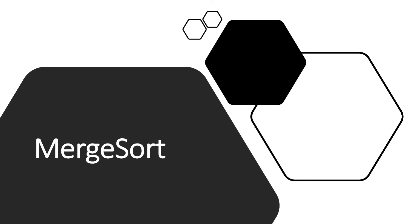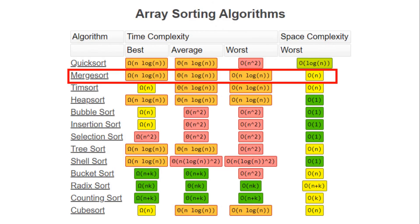In this video we are going to see merge sort, one of the efficient sorting algorithms. Looking at the time complexity, merge sort has O(n log n) for best, average, and worst case, which is more efficient compared to algorithms with time complexity of O(n²). The space complexity for merge sort is O(n) since we are using temporary arrays for sorting.